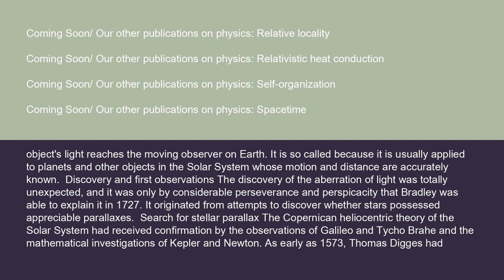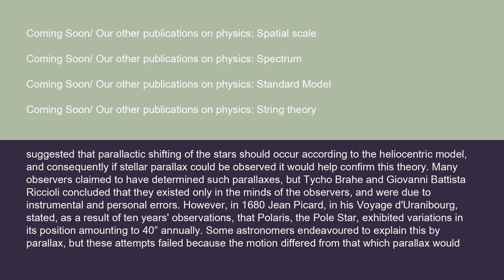The discovery of the aberration of light was totally unexpected, and it was only by considerable perseverance and perspicacity that Bradley was able to explain it in 1727. It originated from attempts to discover whether stars possessed appreciable parallaxes. The Copernican heliocentric theory had received confirmation by the observations of Galileo and Tycho Brahe and the mathematical investigations of Kepler and Newton. As early as 1573, Thomas Diggs had suggested that parallactic shifting of the stars should occur according to the heliocentric model. Many observers claimed to have determined such parallaxes, but Tycho Brahe and Giovanni Battista Riccioli concluded that they existed only in the minds of the observers and were due to instrumental and personal errors.